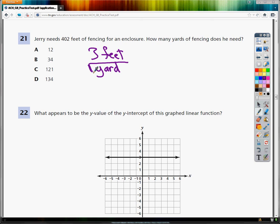So if I have 402 feet, it's easy to multiply times three and get some weird answer, but fortunately the answer choices make it obvious that you're not going to do that. But I have 402 feet.